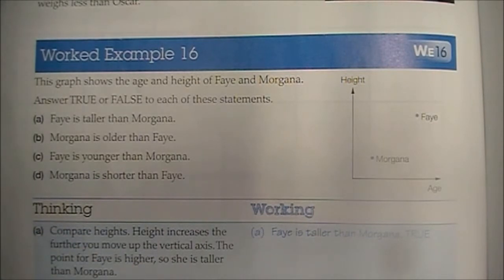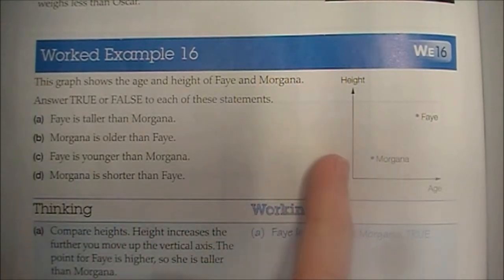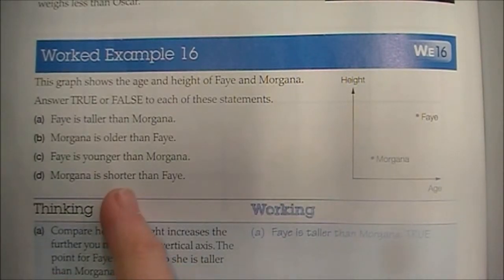Morgana is shorter than Faye. On the height axis, Morgana is lower, Faye is further up, so therefore that is true.